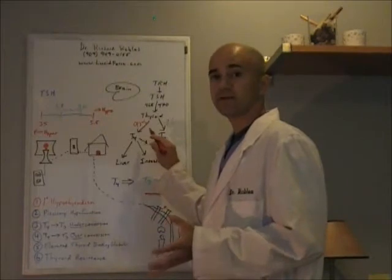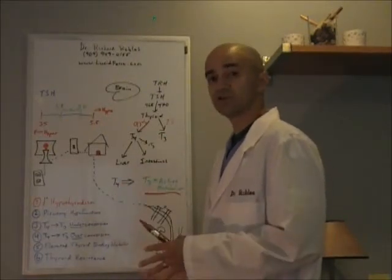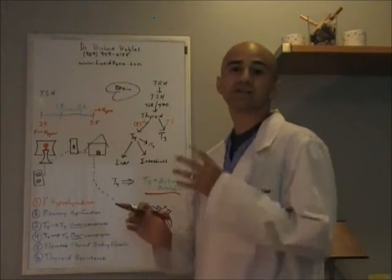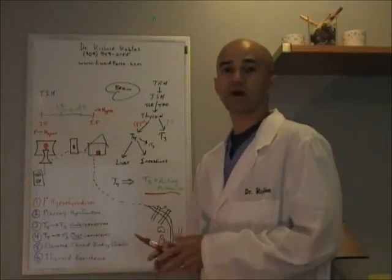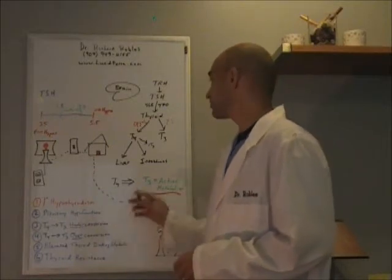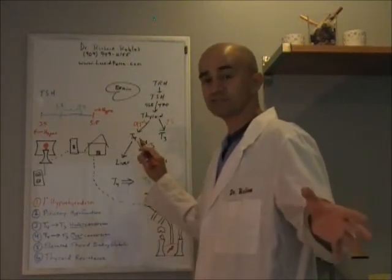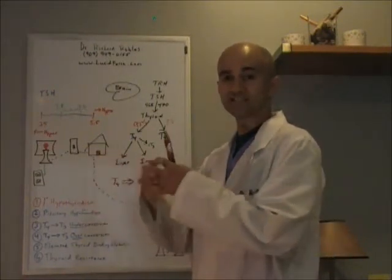So why does your thyroid make 93% of its output into T4 which needs to be turned into T3 to activate your metabolism? That's because all the activity doesn't need to take place in your neck. All the other tissues in your body require stimulation to improve their metabolism to produce energy. So what happens is once your body makes this T4 it's moved out to the tissues.